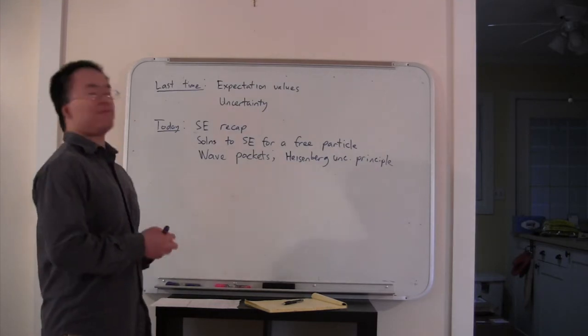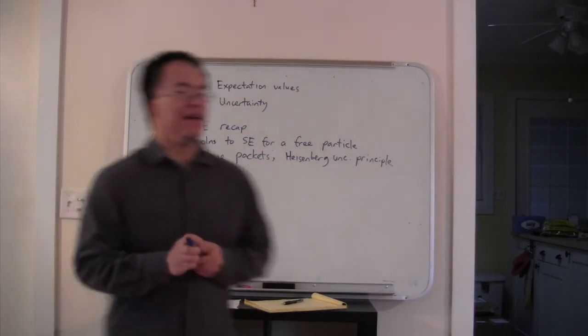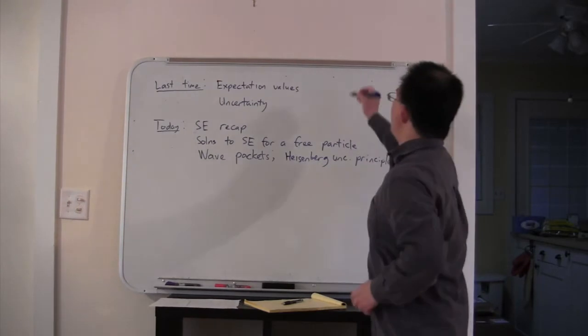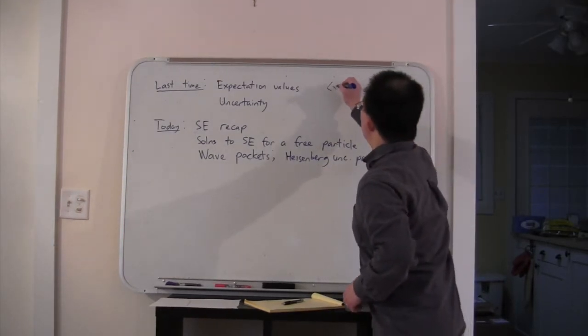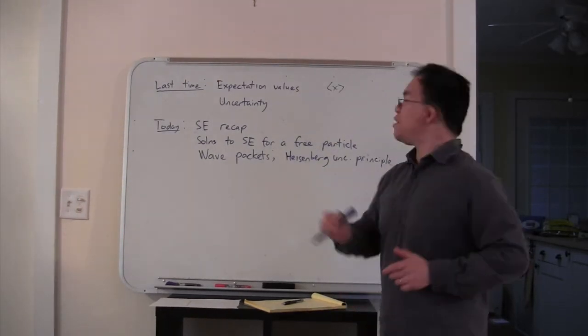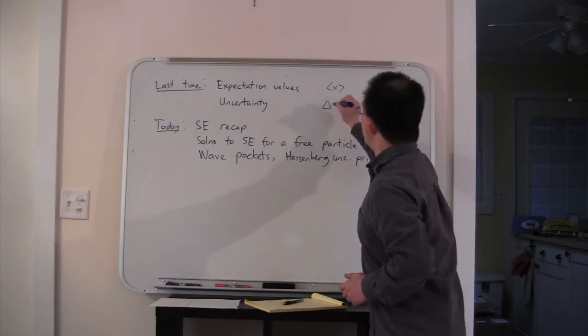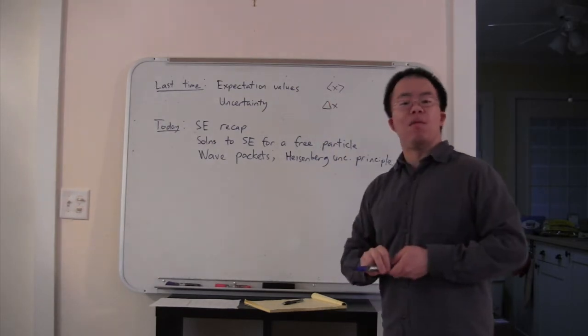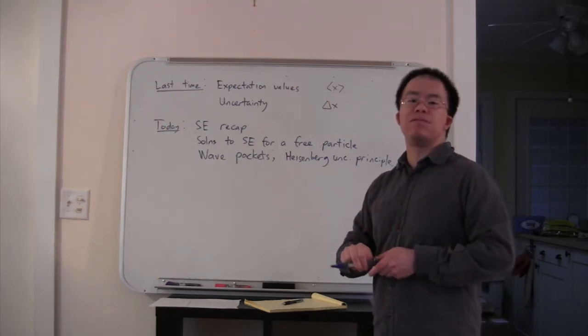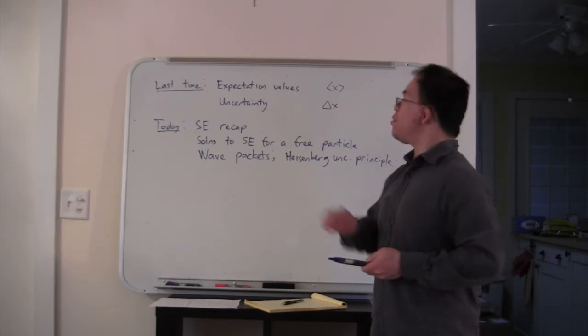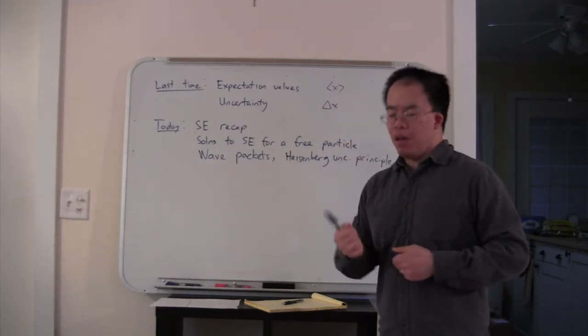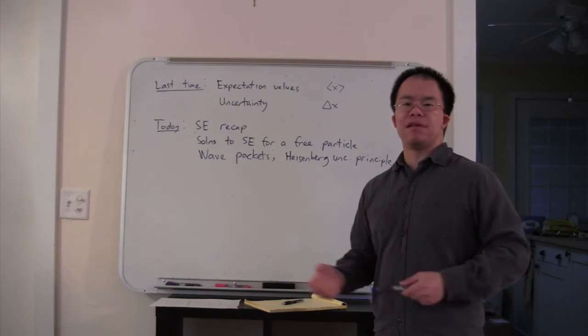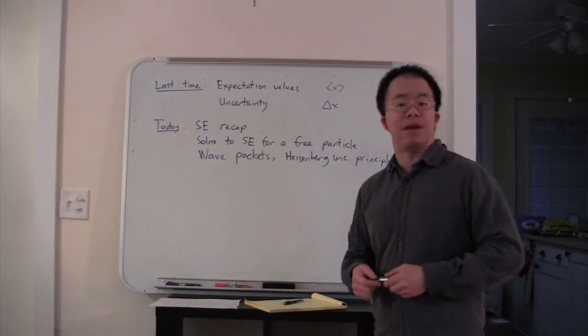We saw how to calculate the expectation value of x and the uncertainty delta x. Hopefully you've had the chance to work through that extended example where you were calculating a bunch of things about a particular, somewhat artificial, wave function.